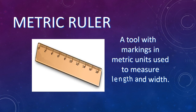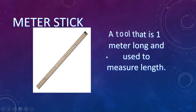Next we have a metric ruler. In science class we'll always use the metric system, so our rulers are two-sided — usually there's an inches side and a centimeter side. You want to make sure you're always using the centimeters so that when we're measuring length and width it's in the correct units.